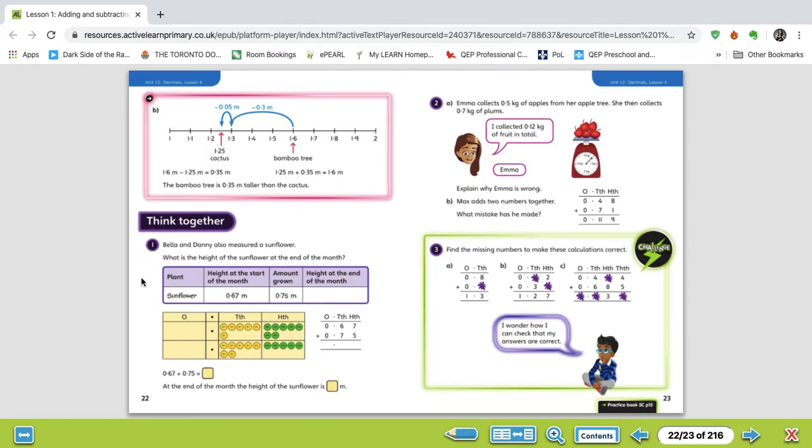So the first question is asking, Bella and Danny also measured a sunflower, and they want to find the height of the sunflower at the end of the month. So on top of that, they've already done a sunflower. So we've got the height at the start and the amount grown. This should be the exact same to what we've just done in Discover, not too challenging.